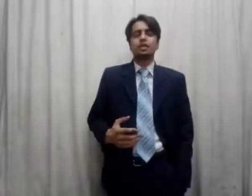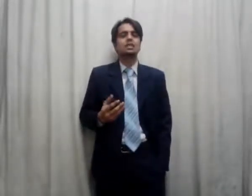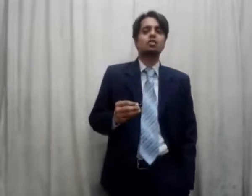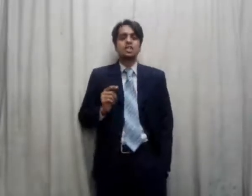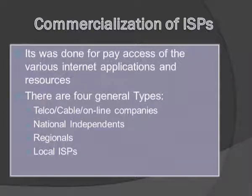Now let's discuss commercialization of ISPs — Internet Service Providers. In the beginning, government tried to hold complete control on internet distribution, with connections given only from the government sector. But as the need for internet increased, the government decided to commercialize ISPs, meaning creating different private internet service providers. These include: number one, telco, cable, or online companies; number two, national independent ISPs; number three, regional ISPs; and number four, local ISPs.